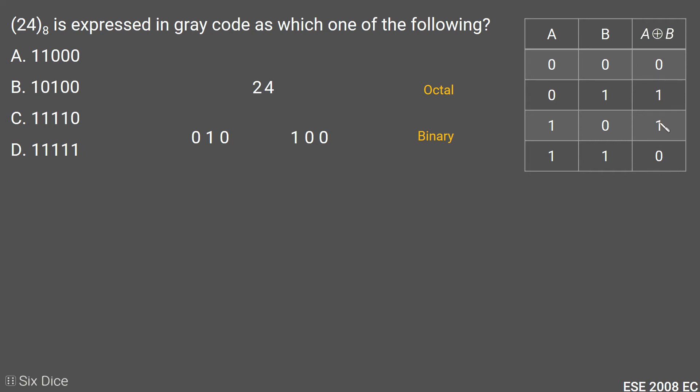Now we will convert our binary number into gray code. First, we write down our binary number.